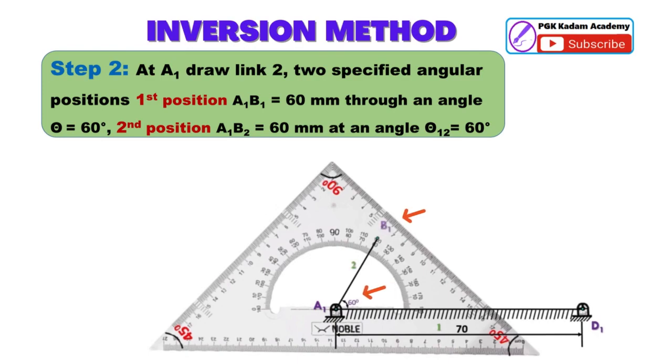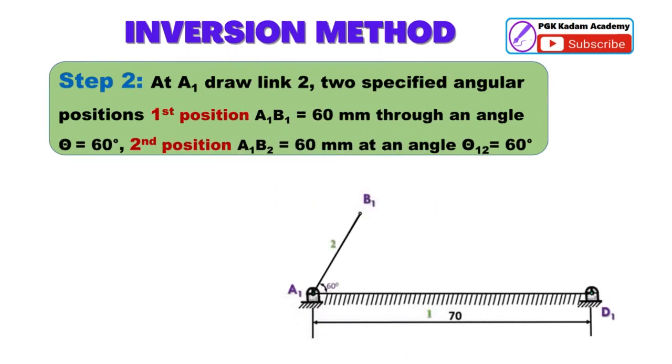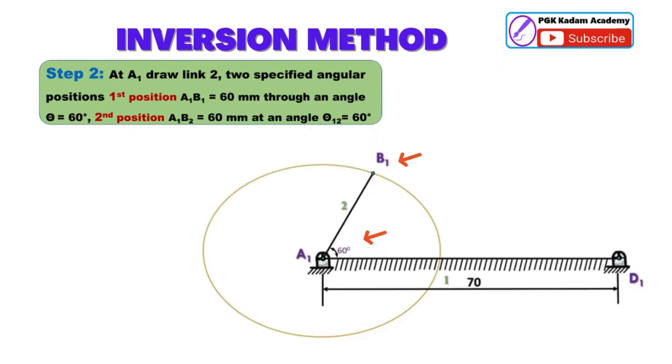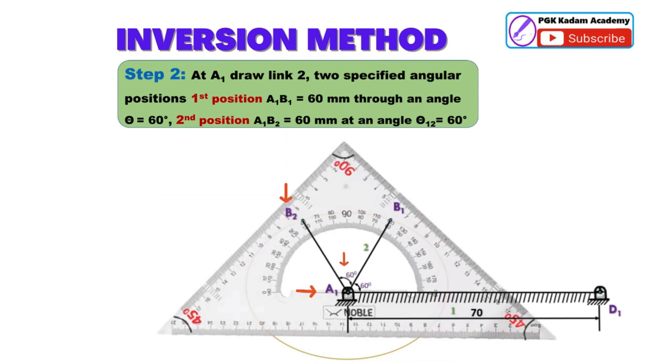Step 2: At A1 draw link 2 with two specified angular positions. First position A1B1 equal to 60 millimeters through angle theta equal to 60 degrees. Second position A1B2 equal to 60 millimeters through angle theta 1-2 equal to 60 degrees.